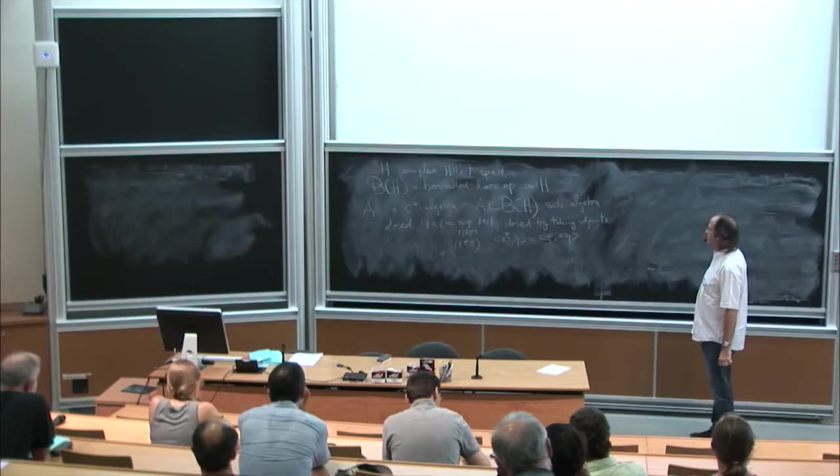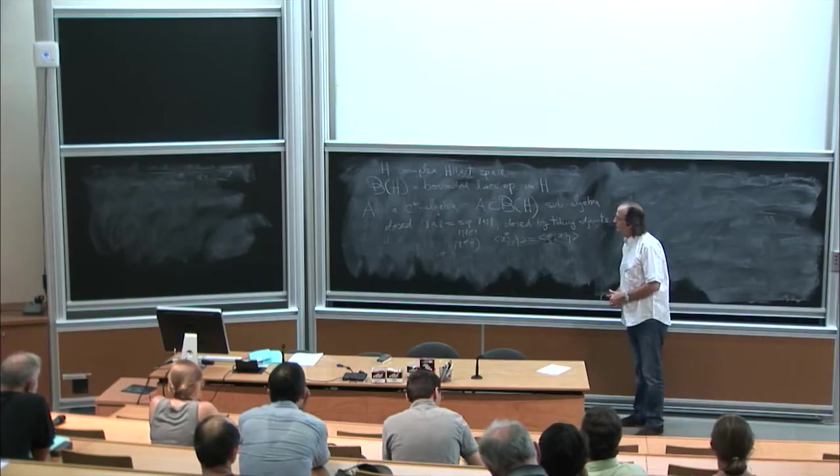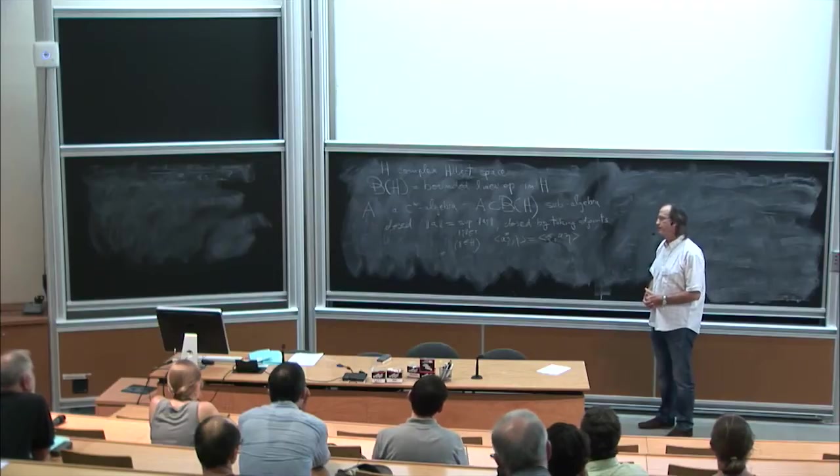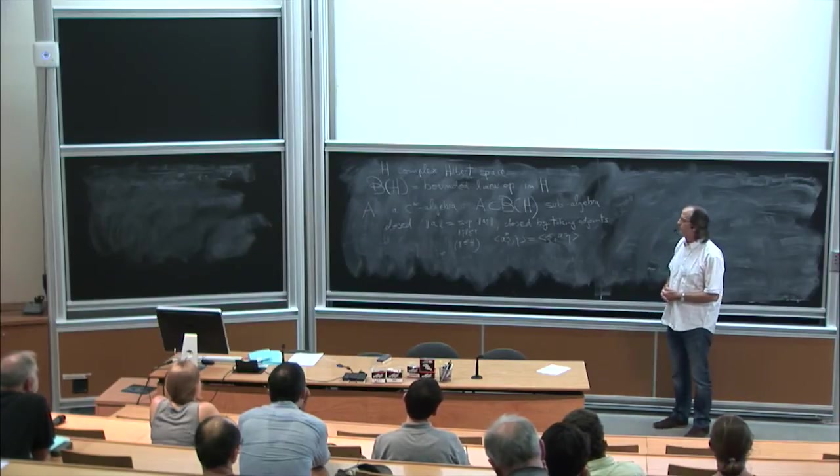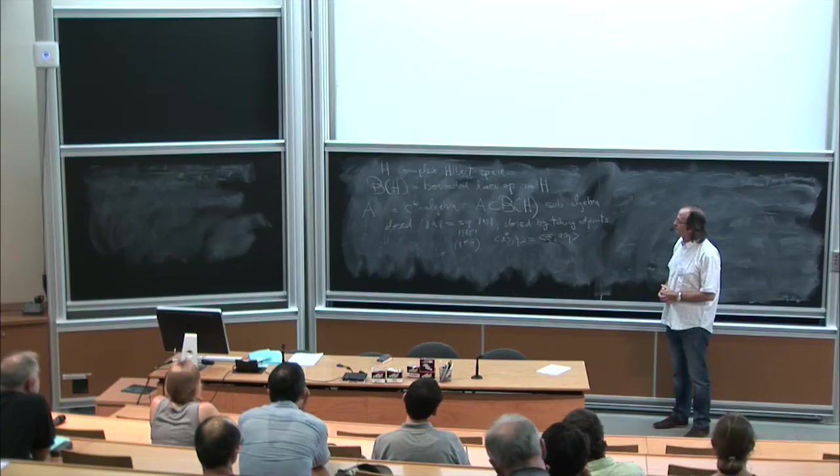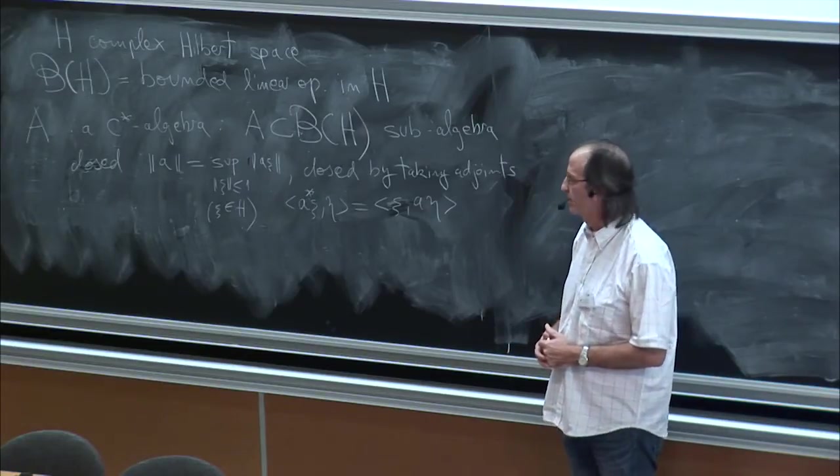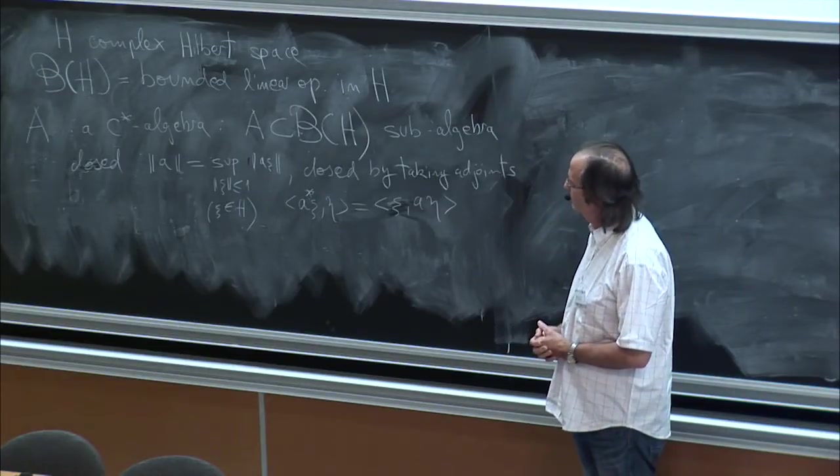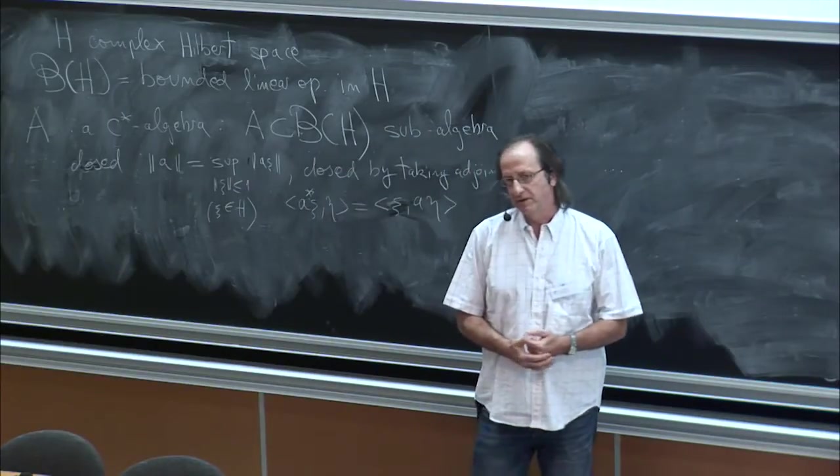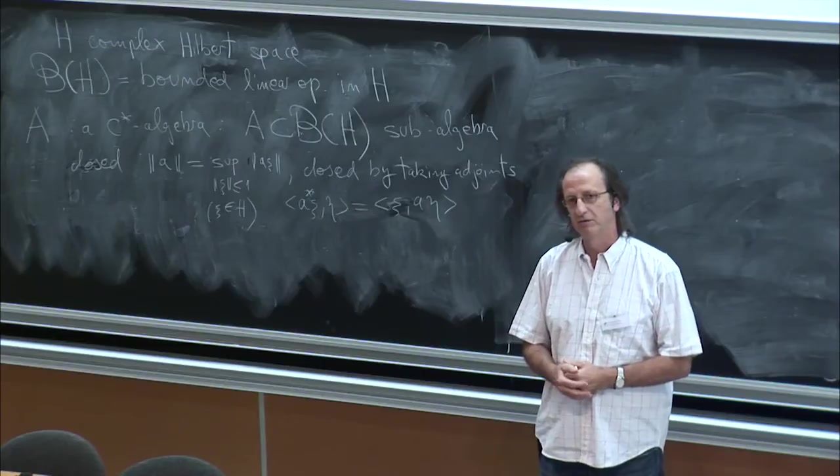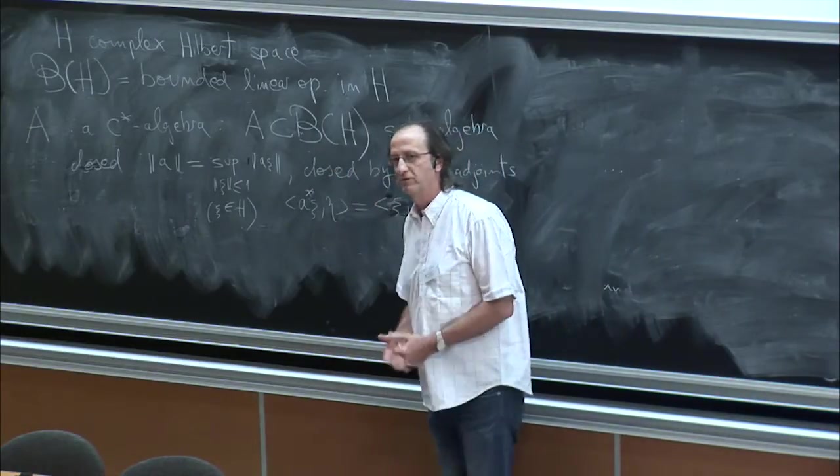In fact, C-star algebras do not need Hilbert spaces to be defined, and there is an intrinsic definition which doesn't make use of any Hilbert space. They turn out to be sub-algebras of operators, but you must keep in mind that there is no special or intrinsic Hilbert space here. You may represent it in many different spaces according to your needs.